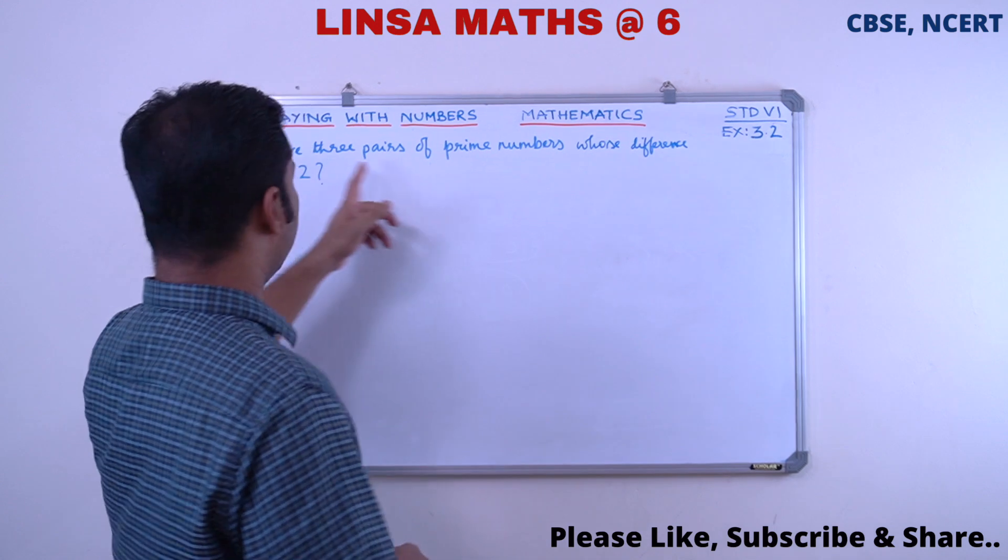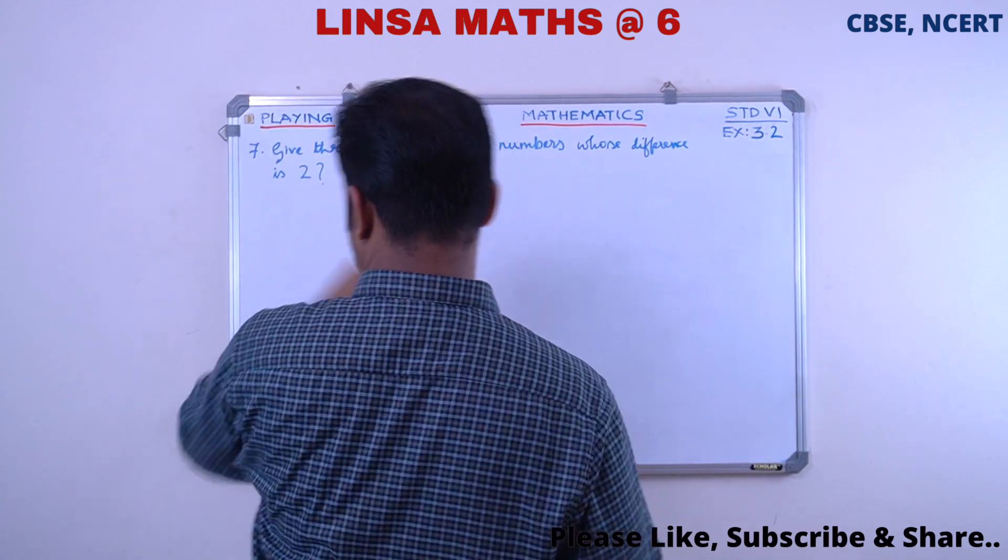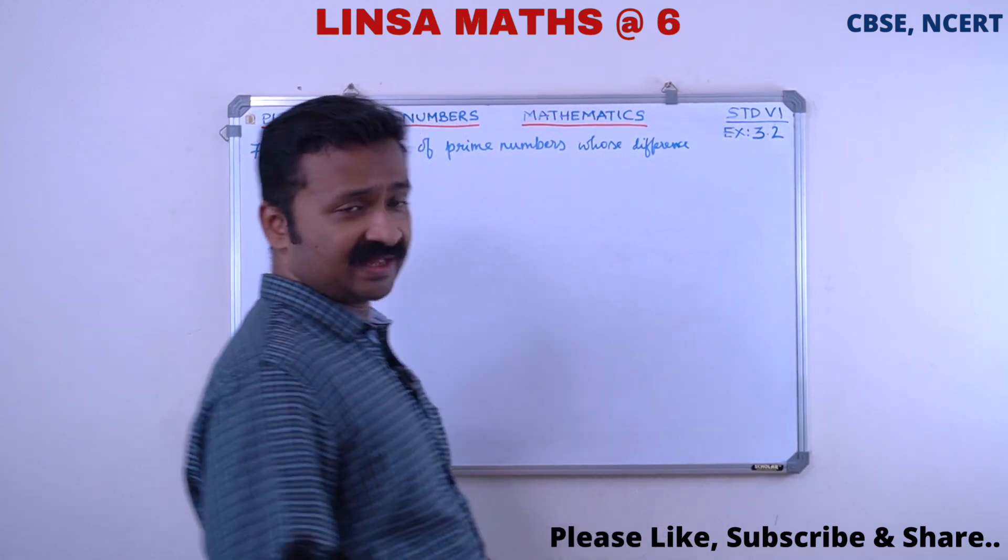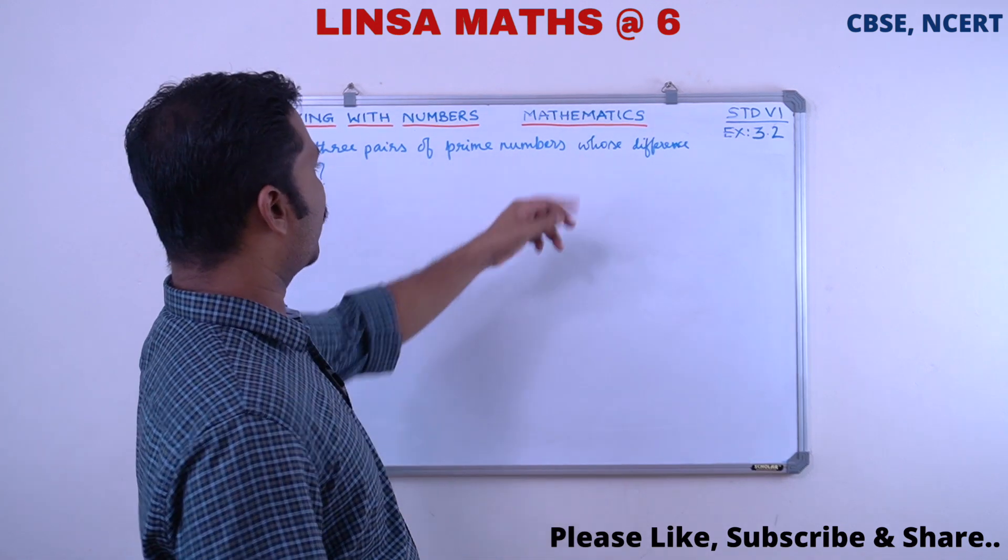The 7th question is: give 3 pairs of prime numbers whose difference is 2.